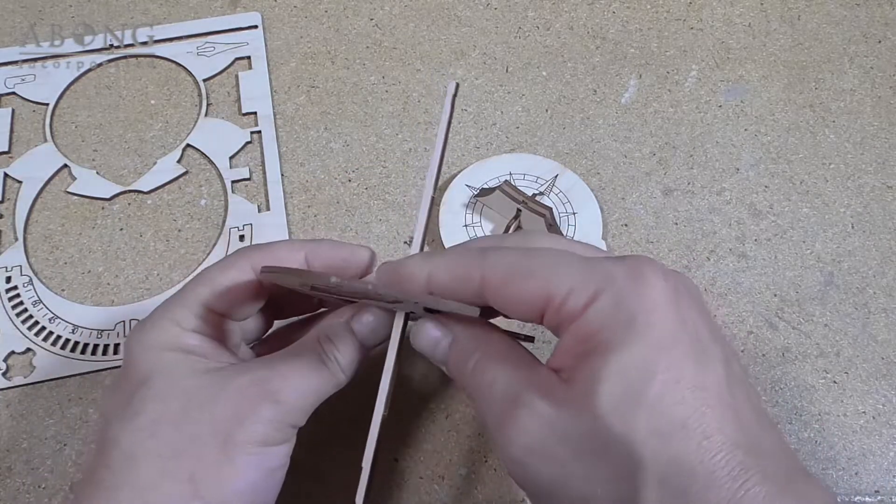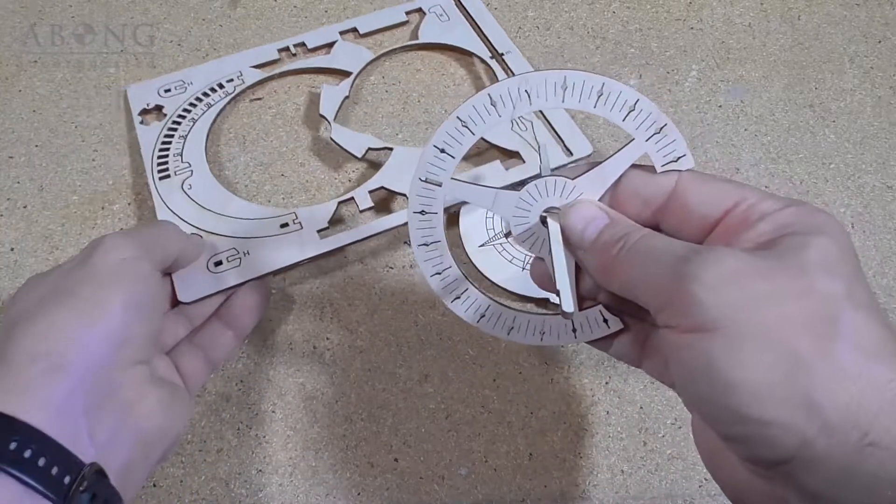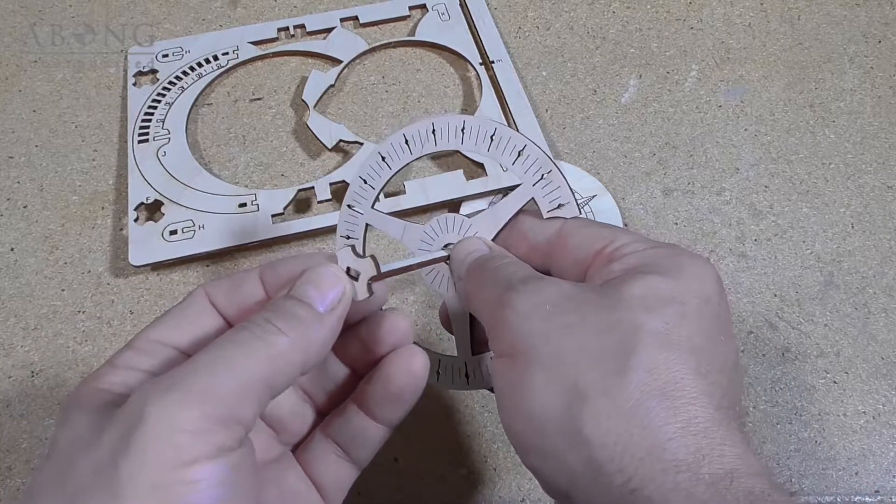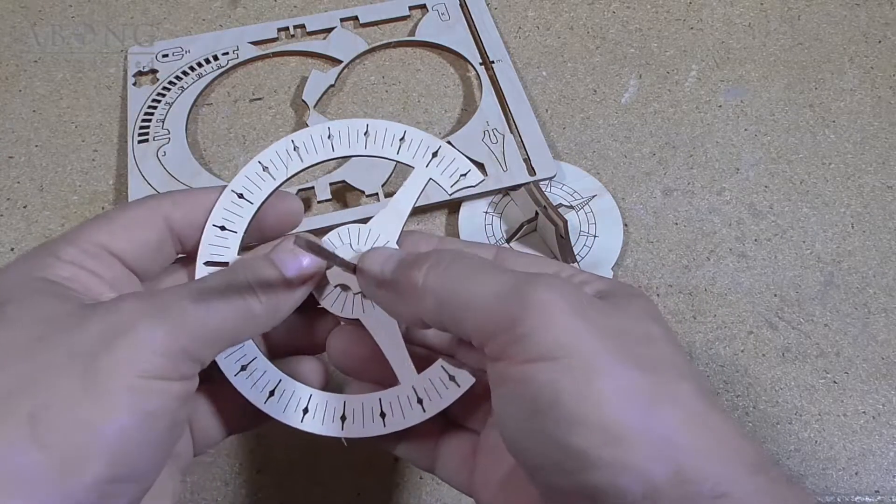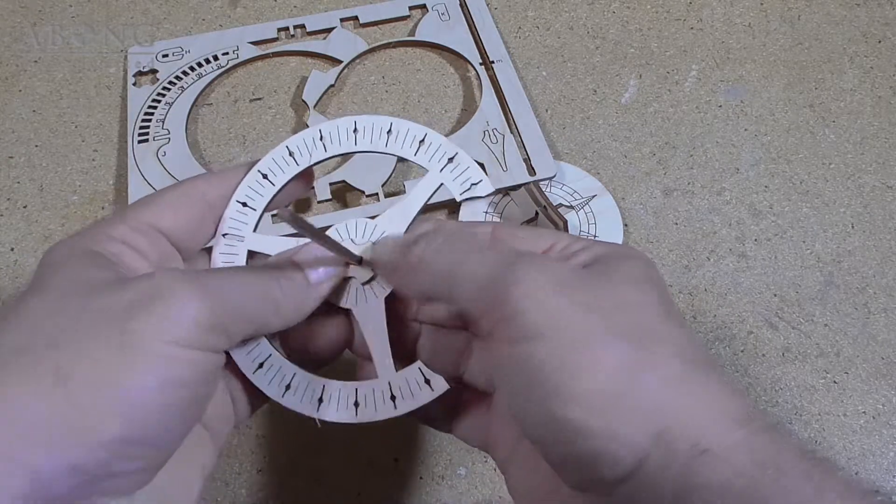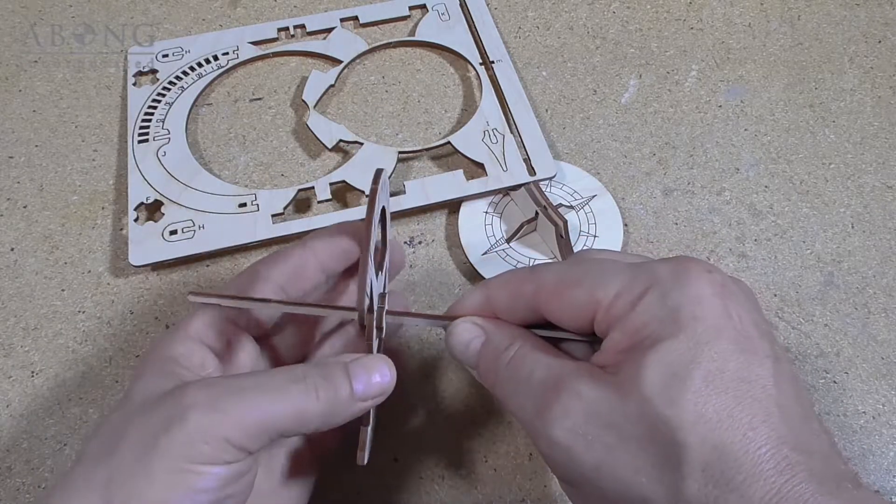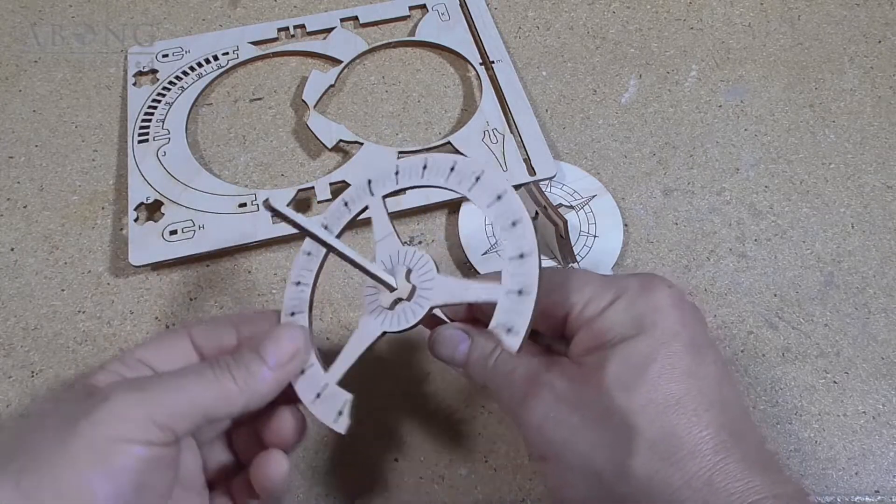So what I'm going to do is I'm going to hold this back here, and I'm going to use the other part F. And I'm going to slide that all the way down and just snap that in place.